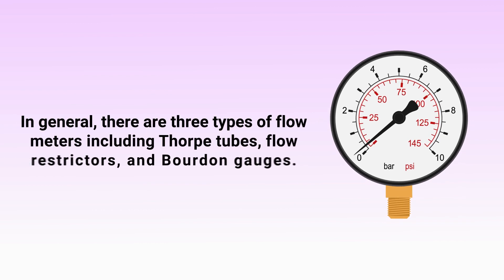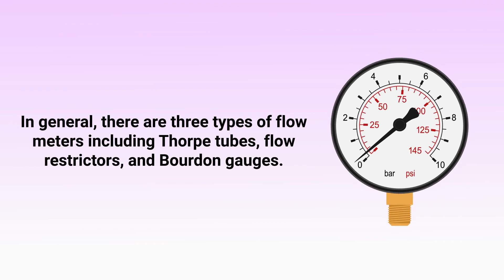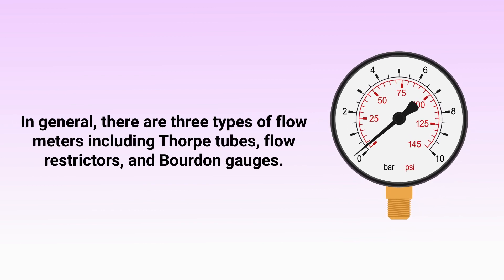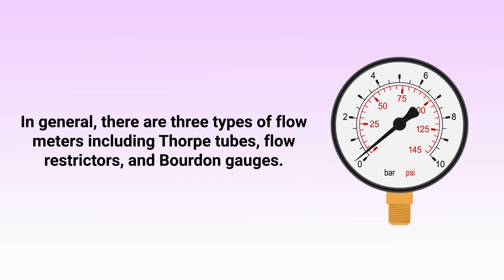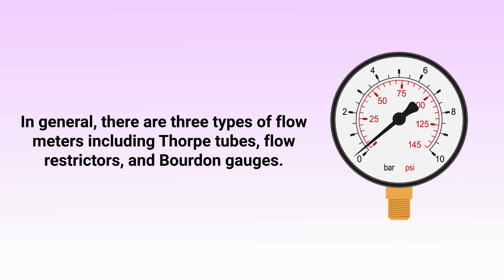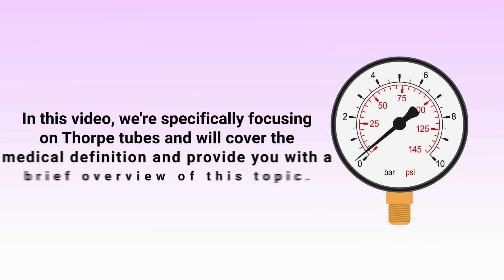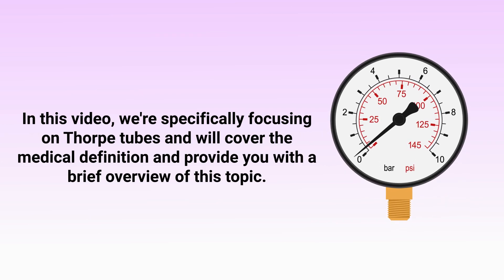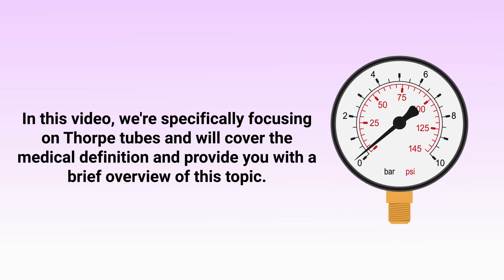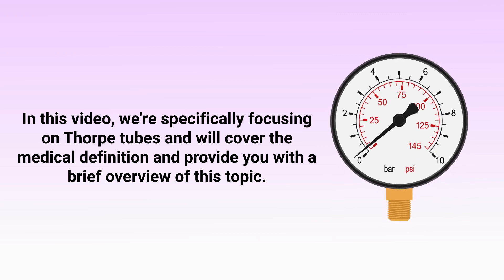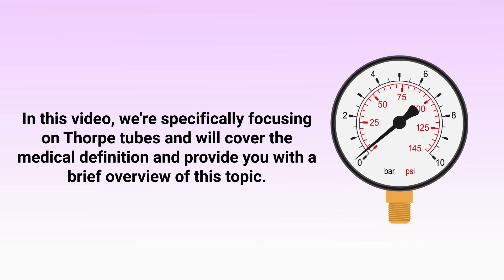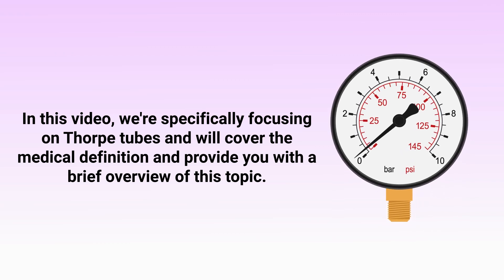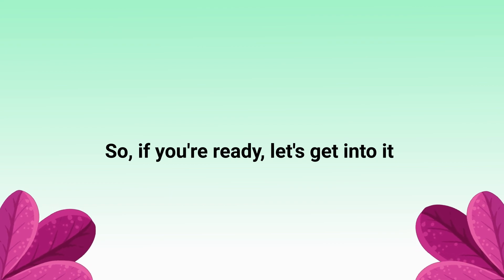In general, there are three types of flow meters, including thorpe tubes, flow restrictors, and bourdon gauges. In this video, we're specifically focusing on thorpe tubes and will cover the medical definition and provide a brief overview of this topic.